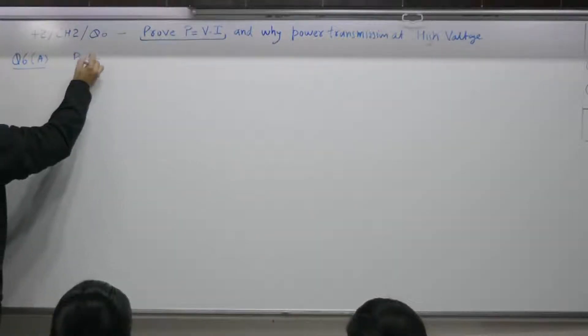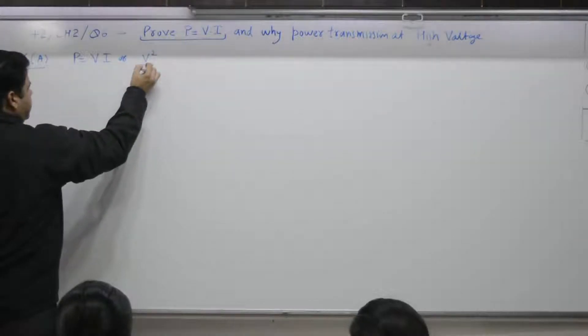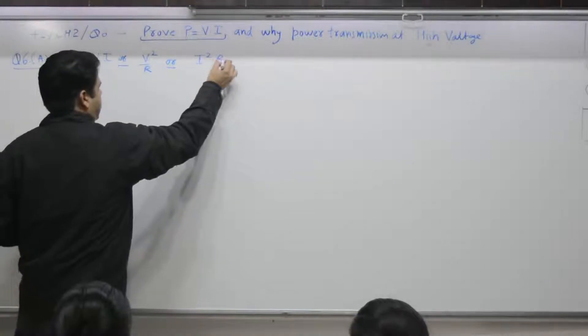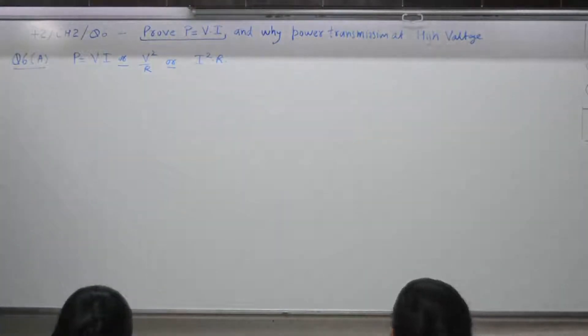You have to prove P is equal to VI or P is equal to V square by R or I square into R. One minute with you to go through. Go through A part, one minute.